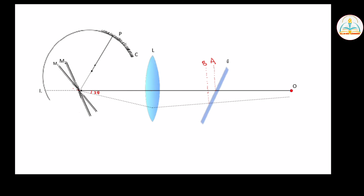Mirror M1 rotates to position M2. Point P is the virtual image point I. Suppose this point B is the I1 point. This gives a vertically opposite angle: 2 theta is equal to 2 theta. This is 2 theta and this is 2 theta.